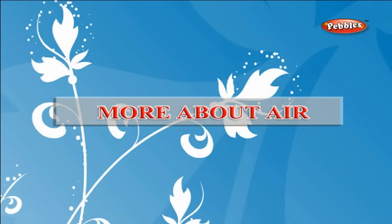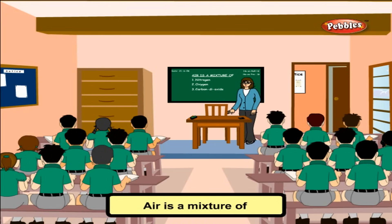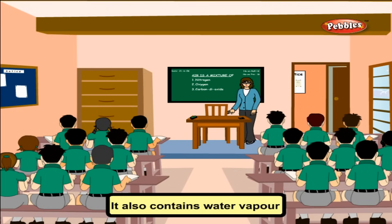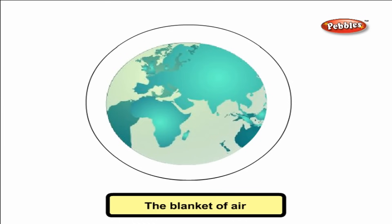More about air. Air is a mixture of various gases like nitrogen, oxygen, carbon dioxide, etc. It also contains water vapour and dust. The blanket of air that surrounds our Earth is called the atmosphere.